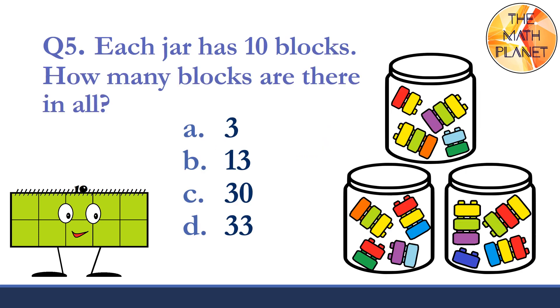Question five. Each jar has ten blocks. How many blocks are there in all? So, let's count by tens. Ten, twenty, thirty. So, the total number of blocks is thirty. And the correct answer is C.